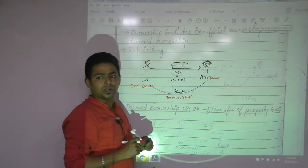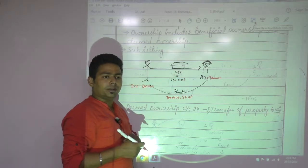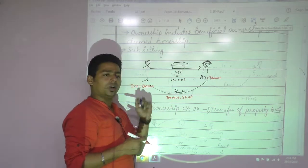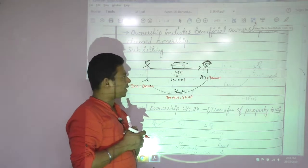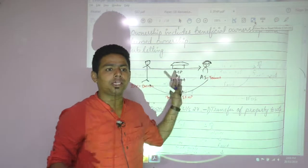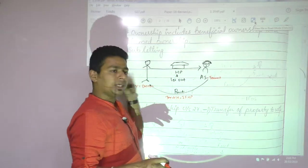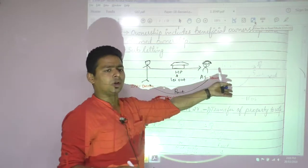This is taxable as IFHP - Income From House Property. Why? Three conditions: there is a house property, the assessee is the owner of house property, and the assessee is not using it for his own business and profession. He is just giving it on hire.